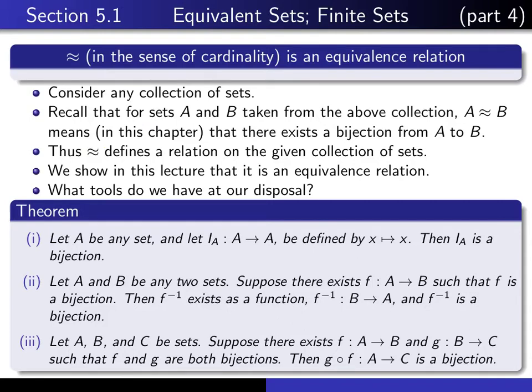So the first one says that if A is any set, and we let I sub A represent the identity function from A to A, the function that maps each element to itself, then that is, in fact, a bijection.